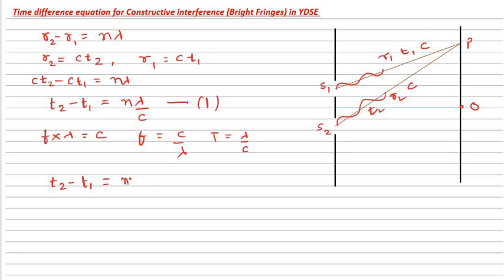Lambda by C we have calculated is the time period. This is the time difference equation at point P of both the waves reaching over here. If the time difference is an integral multiple of capital T, then the formation of fringe at this point will always be a bright fringe. For N equals 0, that is the central bright fringe, the time difference delta T is 0. For first bright fringe, delta T time difference is capital T, and so on.